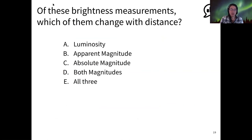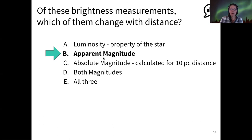Okay. So just to review our brightness measurements, which brightness measurements change with distance? And I see most votes for B, which is correct. So the apparent magnitude is the only one that changes with distance. Apparent is what we apparently see. It's what we measure here on Earth. Luminosity is an intrinsic property of the star. And then absolute magnitude doesn't exactly change with distance, but it's defined with respect to a 10 parsec distance.